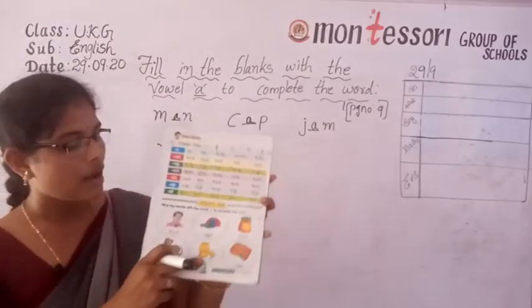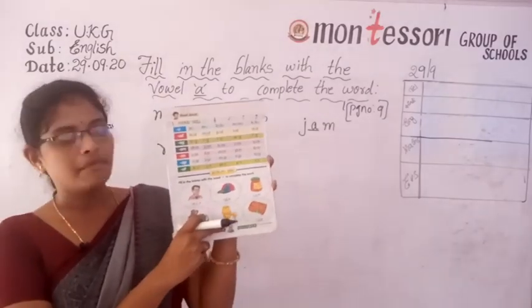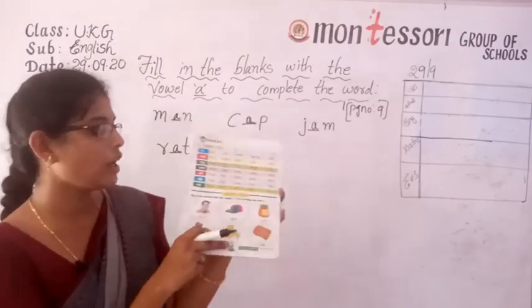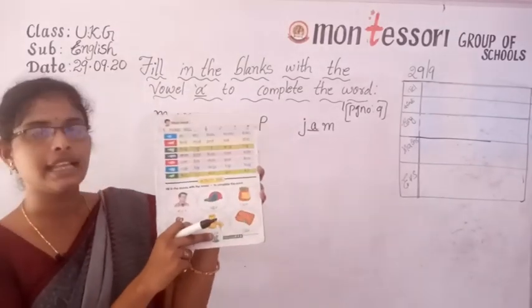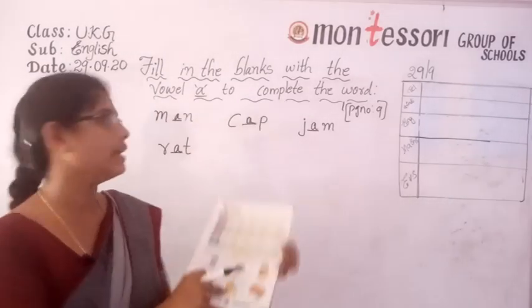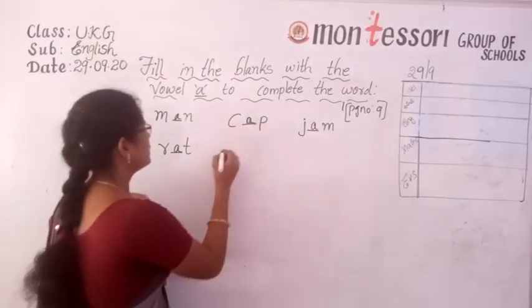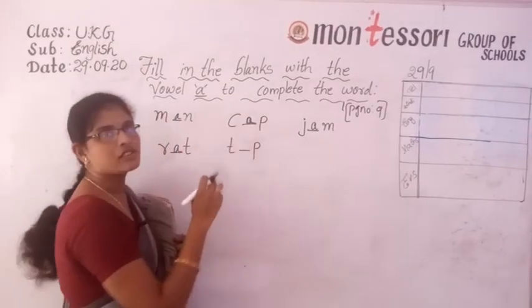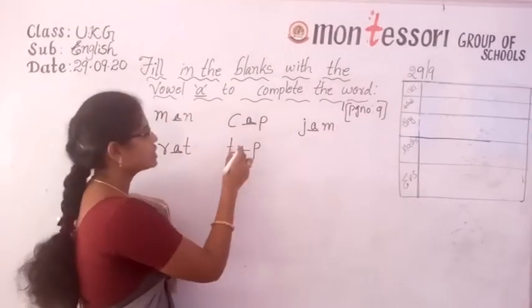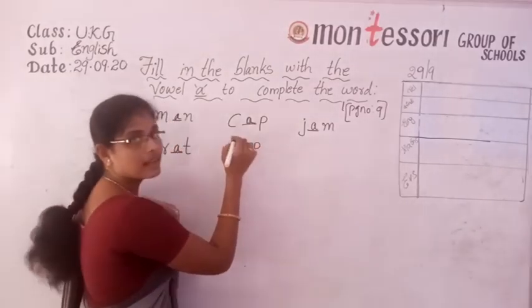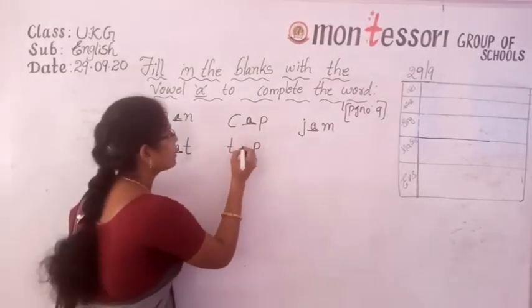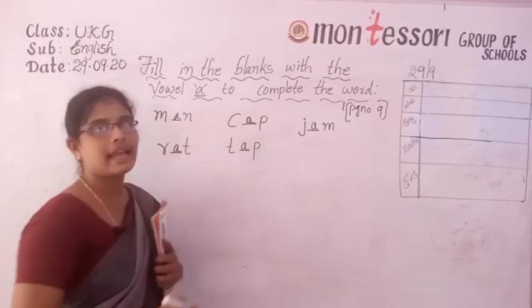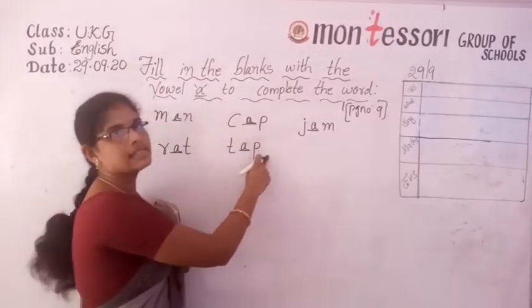Now next. What is this picture? Tap. Below that picture what they have given is T-P. Which letter do we have to write here? Not E — we have to write A. T-A-P, tap.